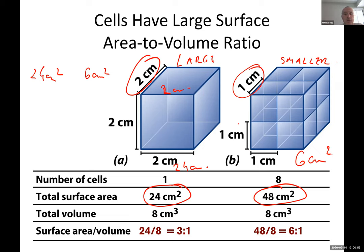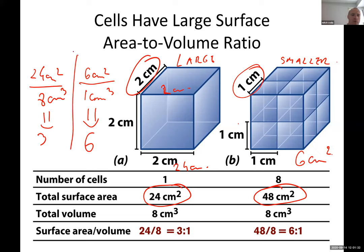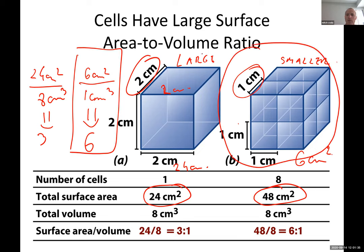For volume, it is length × width × height. The volume of the 1 cm cell is 1×1×1 = 1 cm³. For the 2 cm cell it is 2×2×2 = 8 cm³. When you do the surface-to-volume ratio, the 1 cm cell gives 6/1 = 6, and the 2 cm cell gives 24/8 = 3.